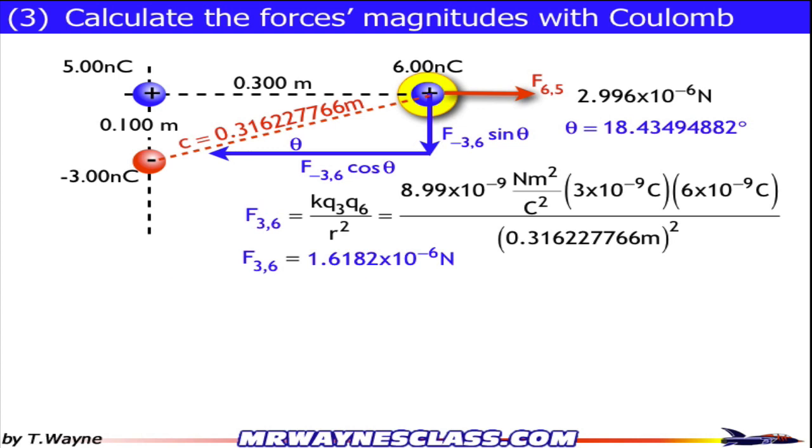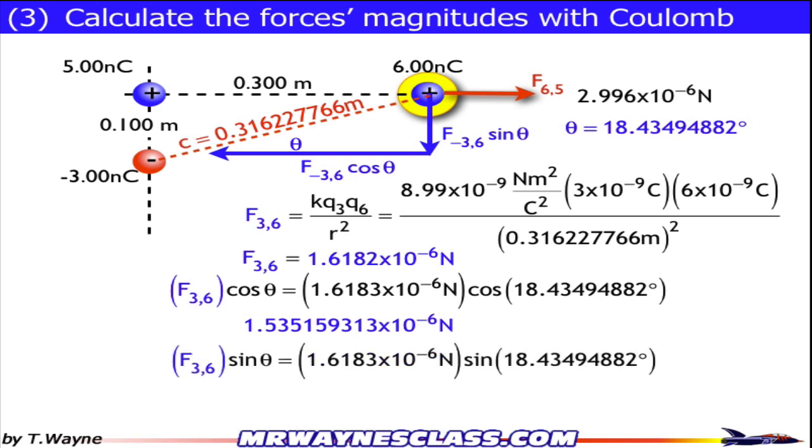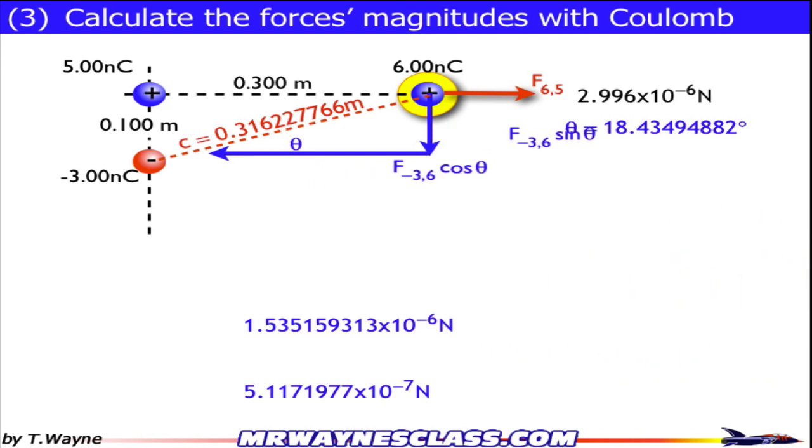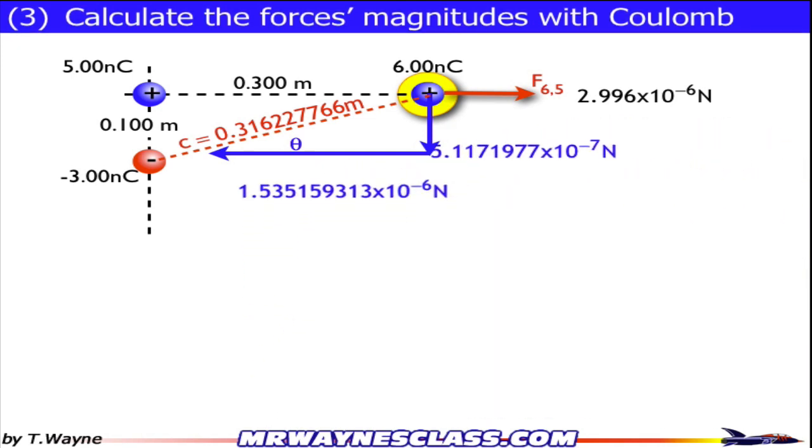But now I've got to find those components. So I'm going to use this as the hypotenuse times the cosine of the angle to give me the 1.53 times 10 to the negative 6. And then I'll do the same thing to find the vertical component, and I get 5.12 times 10 to the negative 7 Newtons. So there's the horizontal and vertical components of the forces.